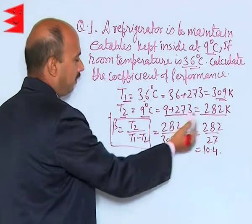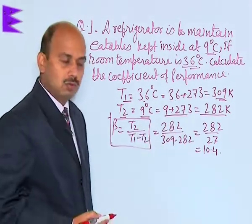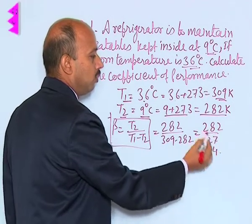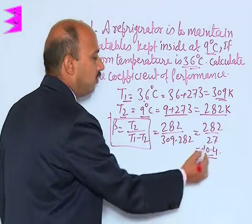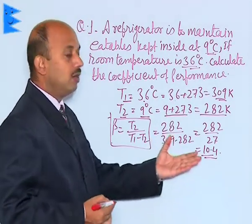Just put the value of T2 and T1. So 282 upon 309 minus 282, and when you solve it, you get 282 upon 27, that is 10.4. The coefficient of performance of refrigerator is 10.4.